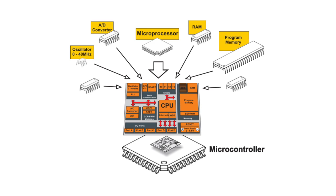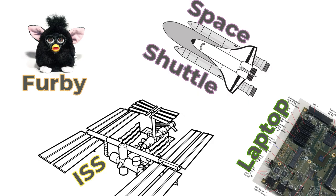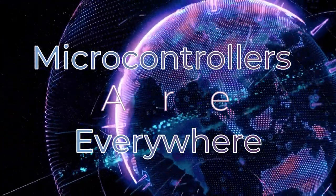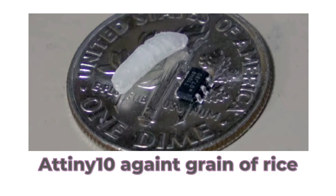Some common examples of microcontrollers include AVR from Atmel, PIC from Microchip, STM32 from STMicroelectronics, ESP32 from Espressif, and the MCS-51 family from Intel — which is now produced by various other vendors. Microcontrollers are used in cameras, mobile phones, TVs, washing machines, space shuttles, laptops, toys, the International Space Station — pretty much everything is controlled using microcontrollers these days. They can be bought for as little as 3 cents a piece and packed in packages smaller than a grain of rice.